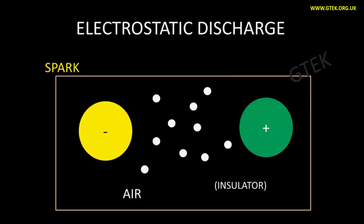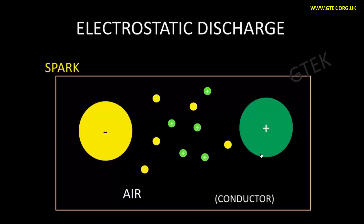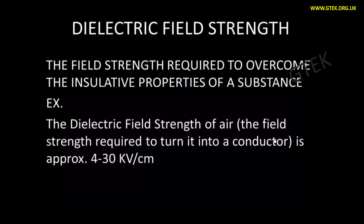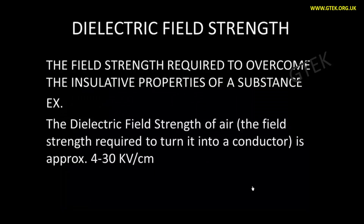That is nothing but electrostatic discharge, where we can find a spark. The yellow representation is indicating the air, whereas the green colour representation is the conductor. You can see the charge which is moved from the air to the conductor, and you can find some positive and negative ions over here. This one is considered to be air and this one is considered to be insulator. Dielectric field strength is talking about the field strength which is required to overcome the insulative properties of a substance — for example, the dielectric field strength of air.